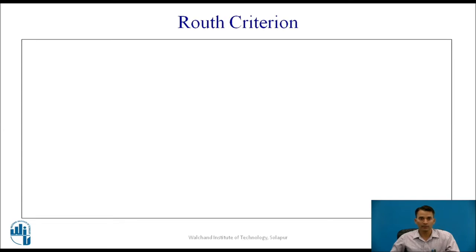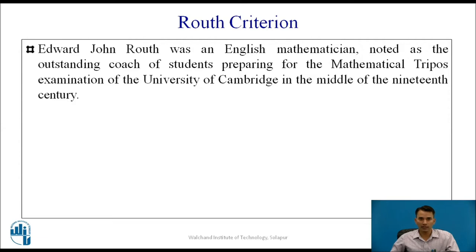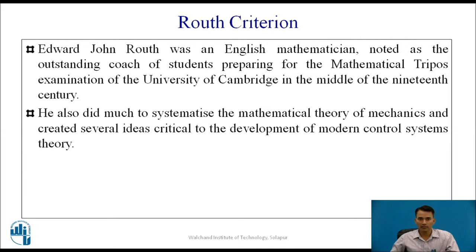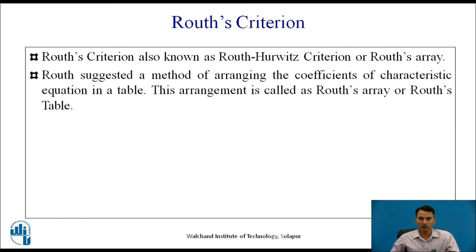Edward John Routh was an English mathematician noted as the outstanding coach of students preparing for the mathematical tripos examination of the University of Cambridge in the middle of the 19th century. He systematized the mathematical theory of mechanics and created several ideas critical to the development of modern control system theory. Edward Routh contributed to Routh-Hurwitz Criteria, also known as Routh's Array.